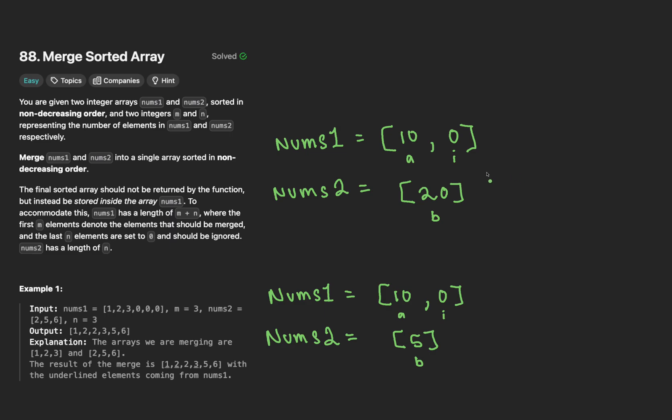All right, going over this first example, we're going to compare what's at a with what's at b. In this case, it's pretty obvious that 20 is going to be larger than 10. So we're going to place 20 where our i index is at. We're going to decrement i. And once again, b is going to get decremented to negative 1, which is the same case as before.